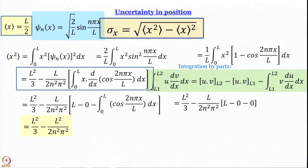This is where we stopped in the last module. We worked out an expression for uncertainty in position, which turns out to be L²/3 minus L²/(2n²π²). To be very honest, what we have worked out is the average value of x², which is the first term under the square root sign in the expression for uncertainty in position. The saving grace is that we already know the average value of x from a previous module: that is L/2.